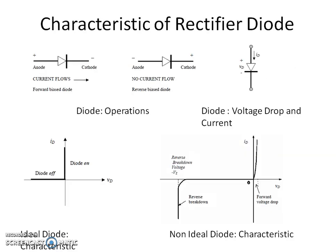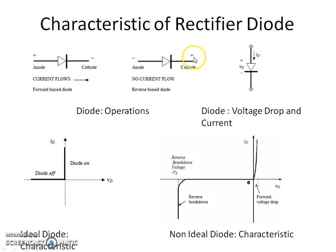First, the characteristic of a rectifier diode is shown. When the diode is forward biased, its anode potential is higher than the cathode potential and current flows. When the diode is reverse biased, its anode potential is lower than the cathode potential and no current flows. This is the symbol of the diode, where Vd is the voltage drop across the diode and Id is the current flowing through it.